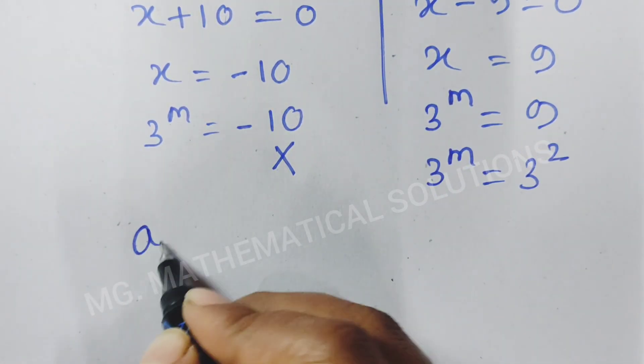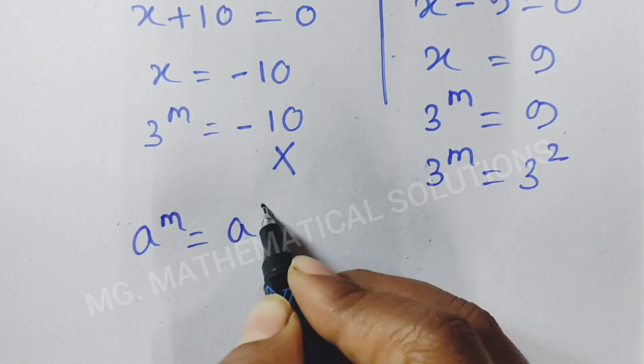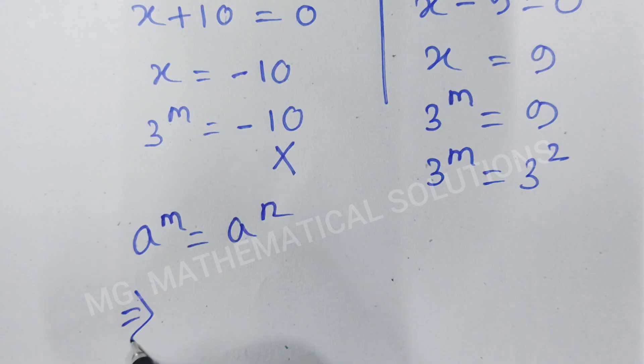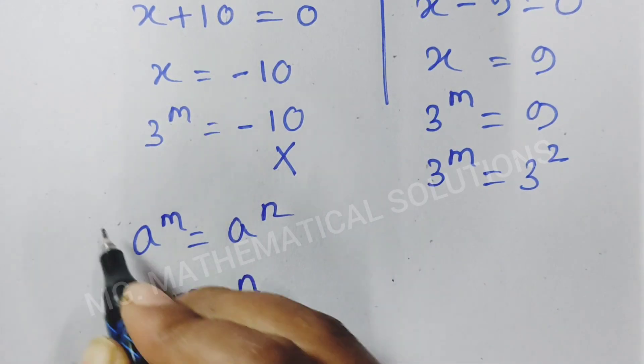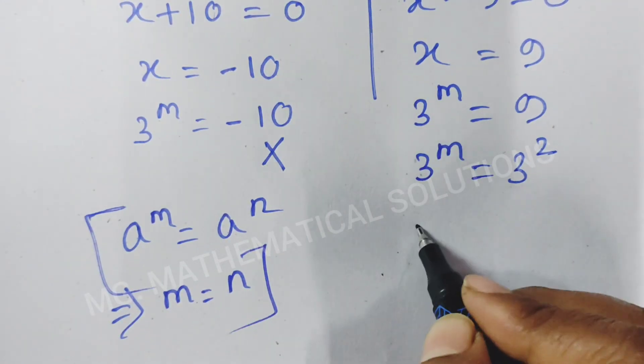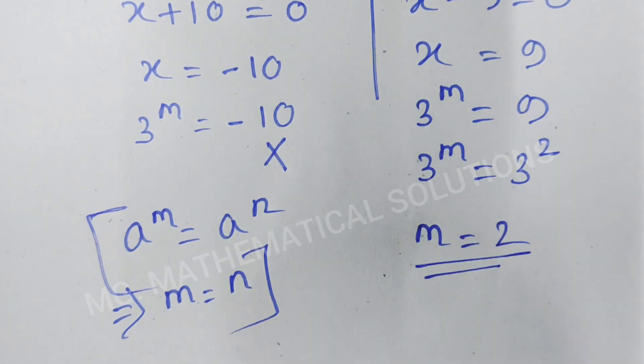Here we use the formula a to the power m equal to a to the power n implies m equal to n. So, here m equal to 2. Now, we check the value.